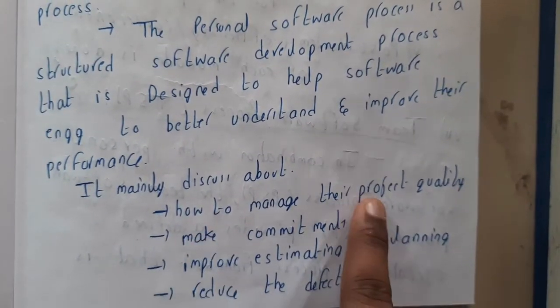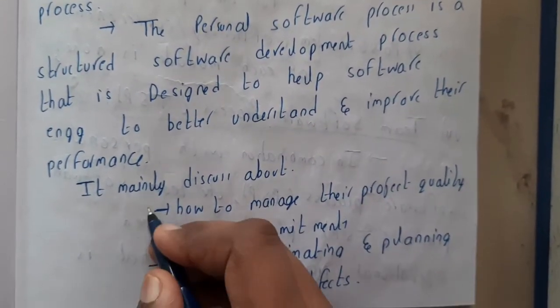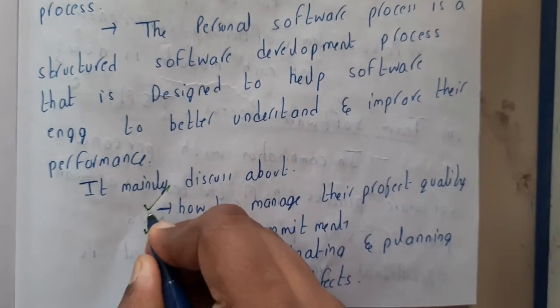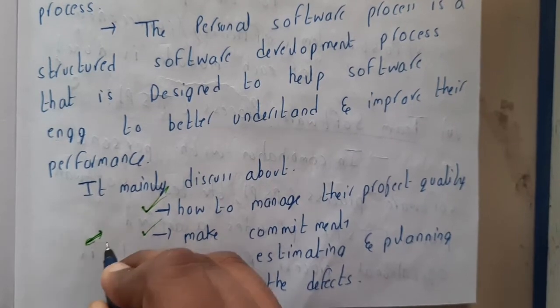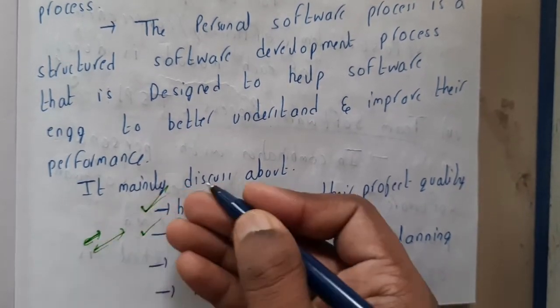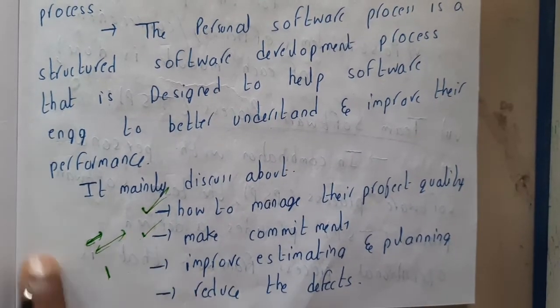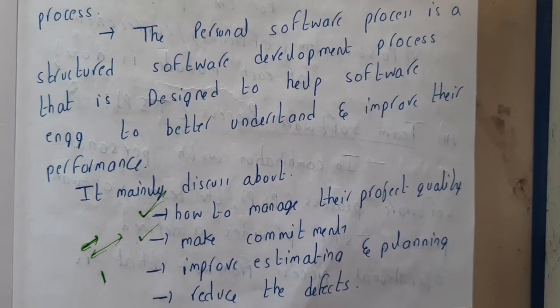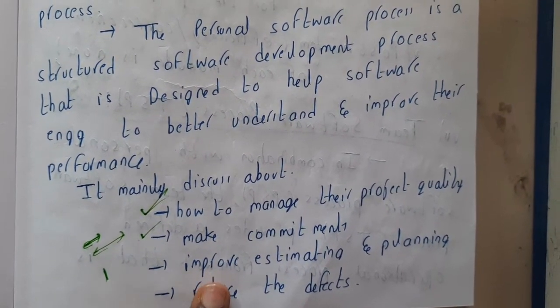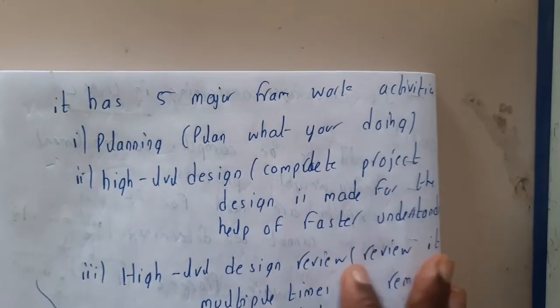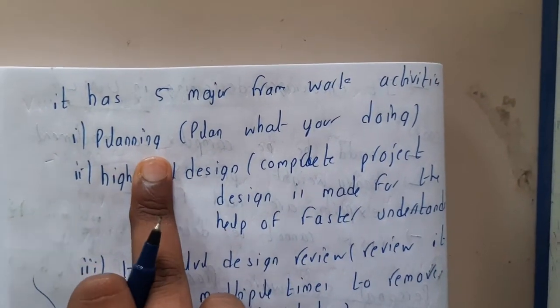The main discussion is about how to manage project quality and make commitments. Basically, you might say you'll complete a project in 10 days but then extend it to 15 days right away. So commitment is mandatory. The goals are to improve estimation and planning and to reduce defects. There are totally five major activities.